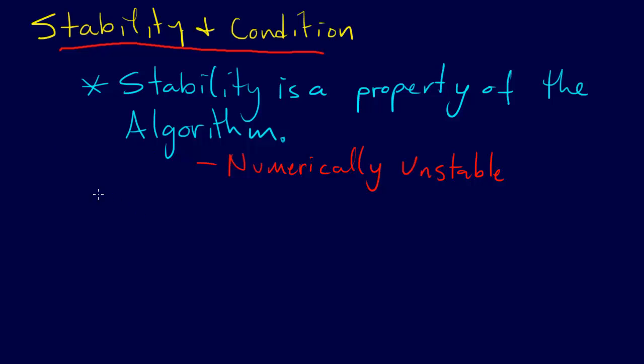On the other hand, we have condition. Condition is a property, not of the algorithm, but of the problem itself.